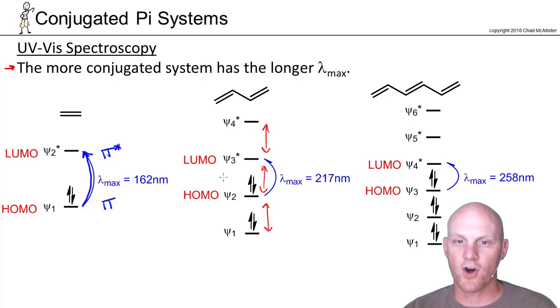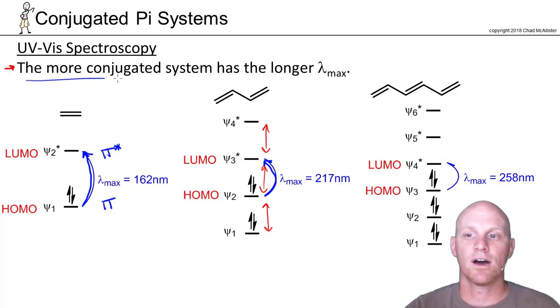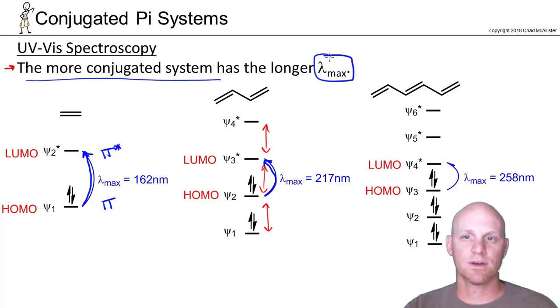So exciting an electron from the HOMO to the LUMO is going to be a lower energy excitation, requiring a lower energy photon to cause it, and a lower energy photon has a longer wavelength. That's the big gist here. Again, the more conjugated the system, the longer the lambda max that's going to be absorbed.